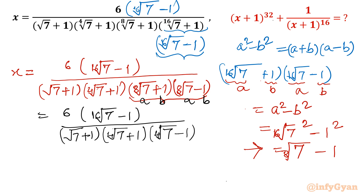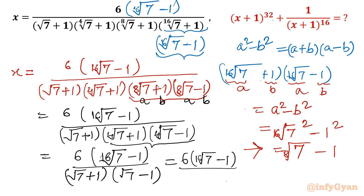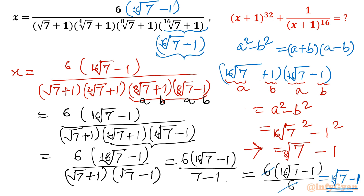After applying the difference of squares again, we get 6(¹⁶√7 − 1) over (√7 + 1)(⁴√7 + 1)(⁴√7 − 1). Applying the identity once more gives (√7 + 1)(√7 − 1) = 7 − 1 = 6. So ultimately we have 6(¹⁶√7 − 1) over 6, and canceling 6 from numerator and denominator leaves ¹⁶√7 − 1.